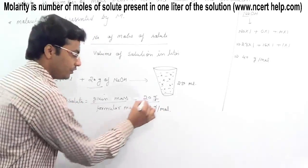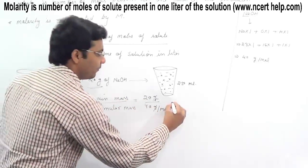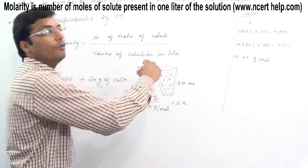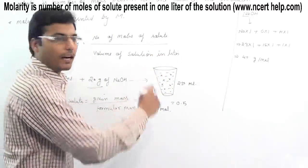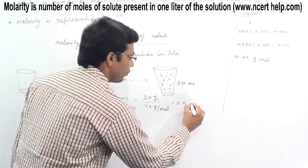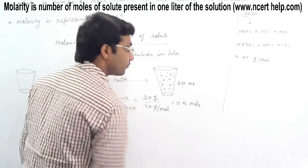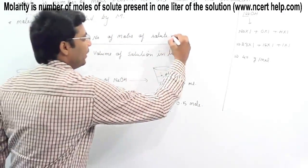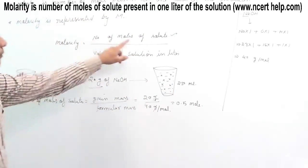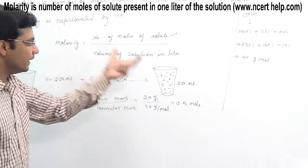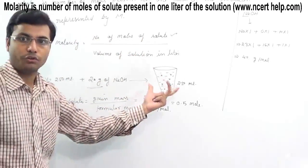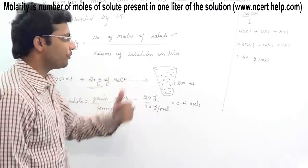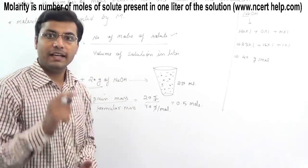Now plugging in the values: 20 grams divided by 40 grams per mole. The grams cancel out, and 20 divided by 40 gives 0.5 moles. So the number of moles of solute in this solution is 0.5 moles. Now we need to find the volume of the solution in liters.